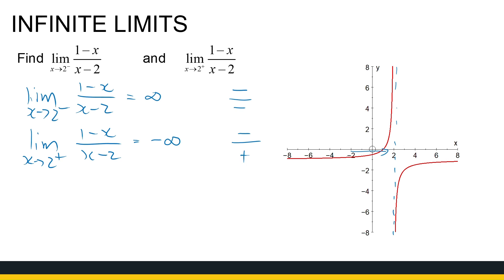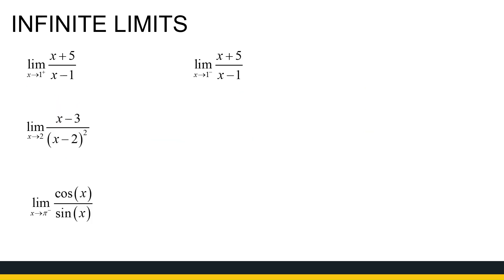What about (x + 5)/(x − 1)? I don't have the sketch, so we have to reason it out. As x approaches one from the negative side — numbers smaller than one, like 0.9999 — my numerator is a positive number. My denominator is negative but very close to zero. So I'm going to go to minus infinity.